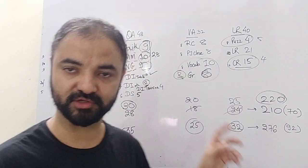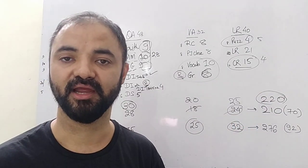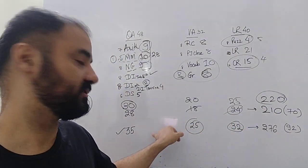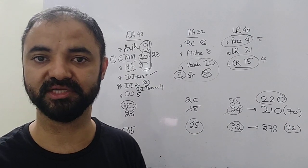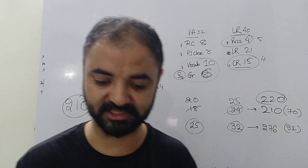To clear the cutoff your target is 30 correct, 20 correct, 25 correct in each of these sections. And from the attempt point of view, 35, 25, 32 is an ideal attempt. Please pause the video and note all these things.